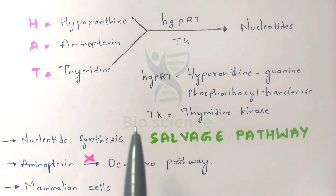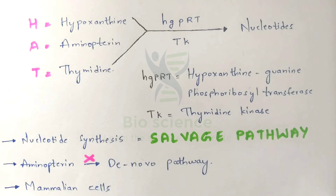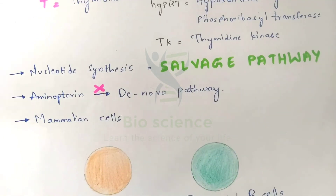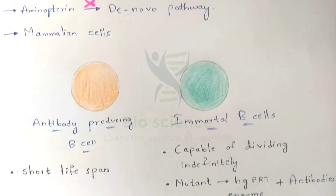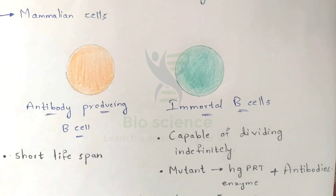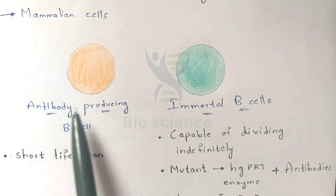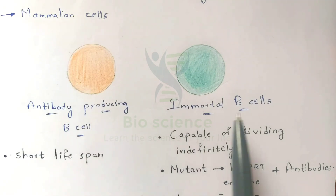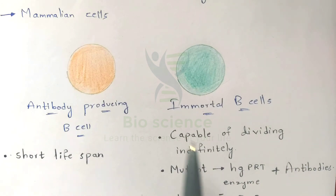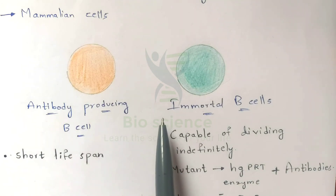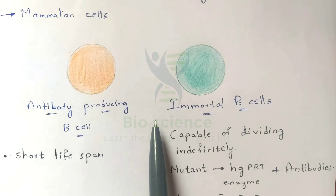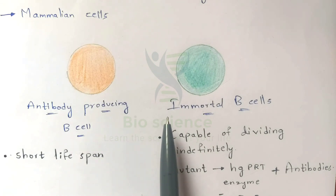Now let us understand the experiment in detail. I am taking two mammalian cells: an antibody-producing B cell and an immortal B cell. By working with both of these cells using HAT medium, we can understand why HAT medium is used.